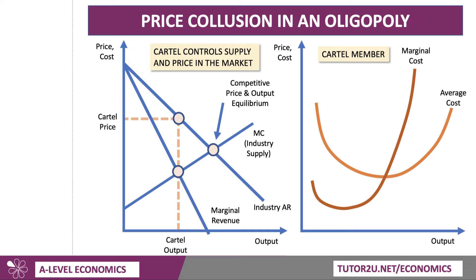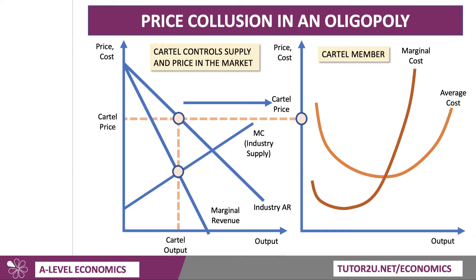When demand is price inelastic, consumers are insensitive to the price — demand doesn't change very much — and a cartel can exploit that. Once they've set the cartel price and fixed output, that becomes the price each member of the cartel is expected to sell at. Essentially, individual members of the cartel become price takers within the cartel, selling their product — whether olive oil or cement — at the same agreed cartel price.